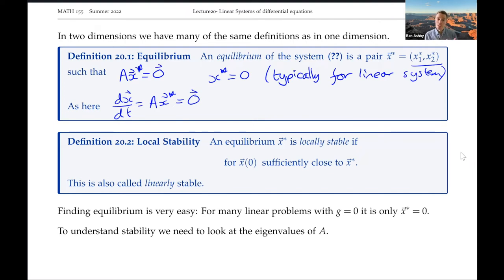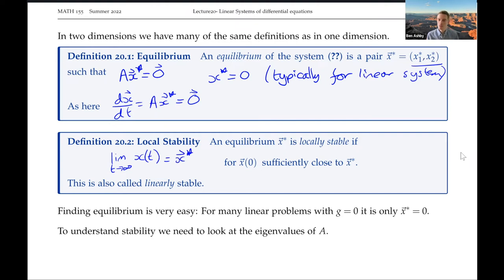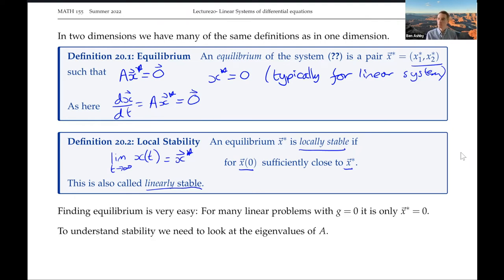We say that an equilibrium x* is going to be locally stable if the limit as t goes to infinity of our solution x(t) equals the state vector x*, for some initial vector x0 sufficiently close to this equilibrium. We can also have cases where things are globally stable, but we're not going to talk about those today.